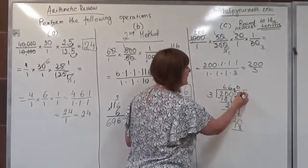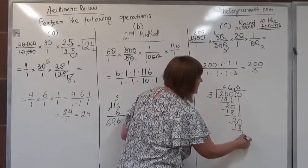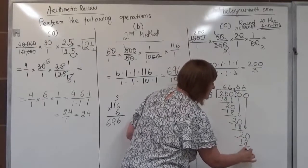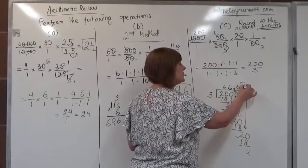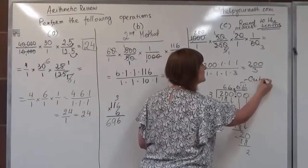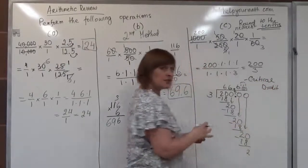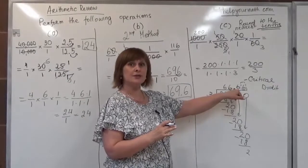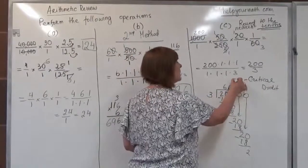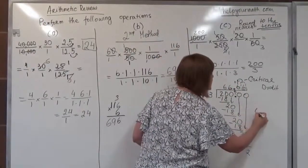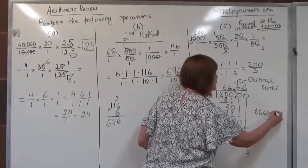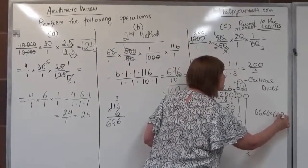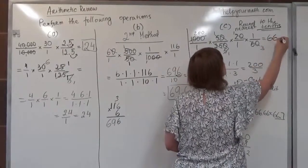We need one more place, so we add an extra zero, bring it down, and it again fits 6 times; minus 18, difference is 2. We call the last digit in the hundredths place the critical digit. Since this critical digit 6 is greater than 5, we add 1 to the tenths place. So 66.66... rounded to the nearest tenth is 66.7. The final answer is 66.7.